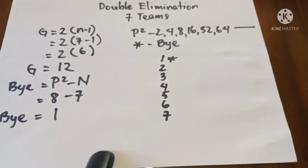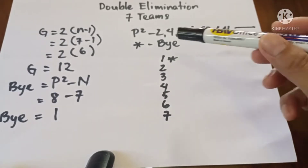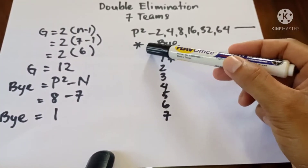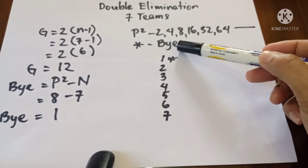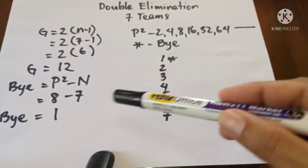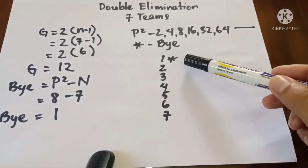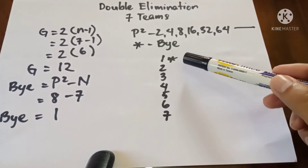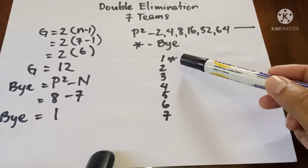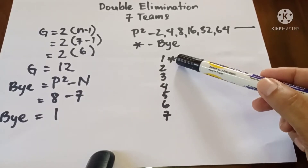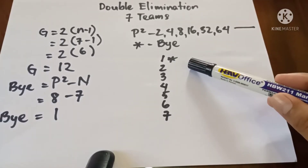Take note that we use an asterisk to identify the bye. Since we have only one bye, it must be placed at the top of the upper bracket. Now let's proceed to the diagram and game schedule.